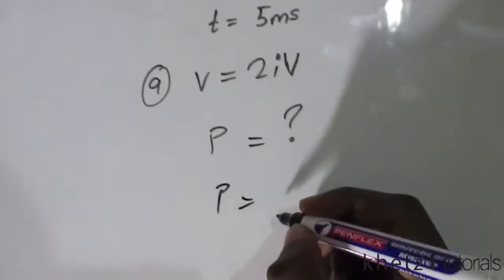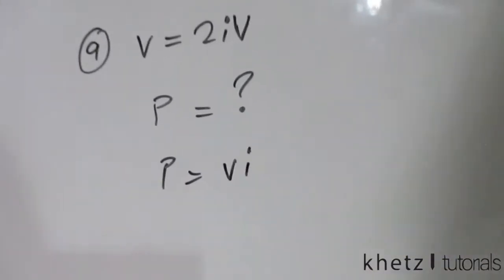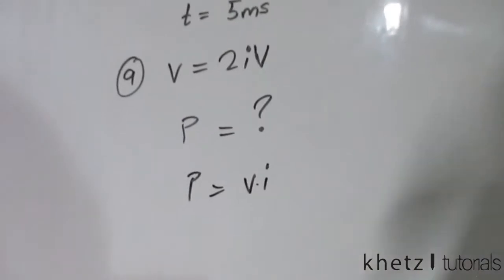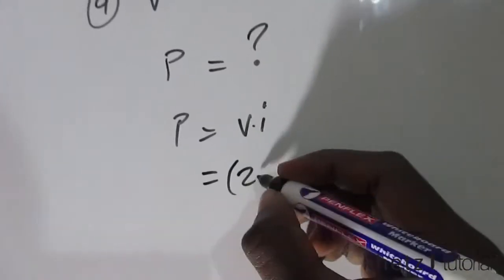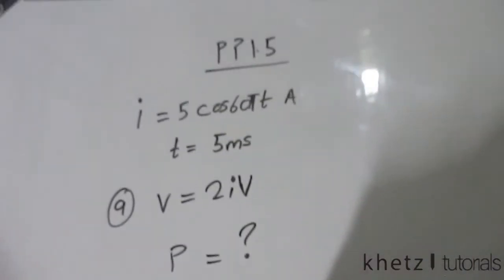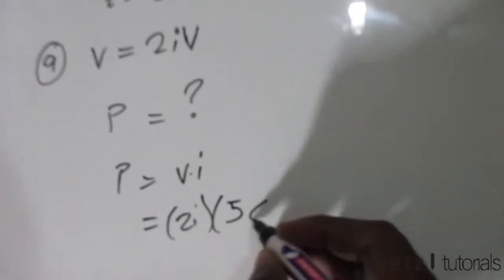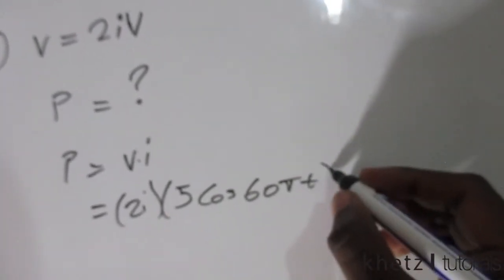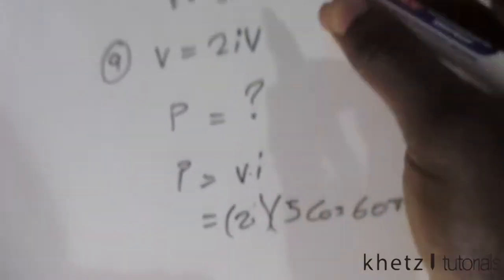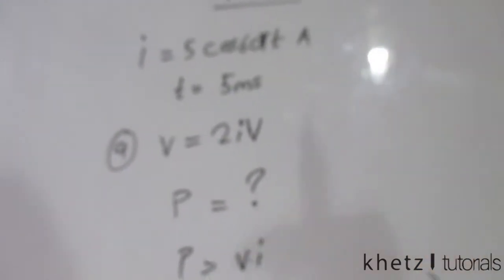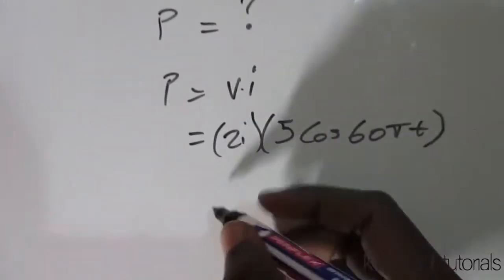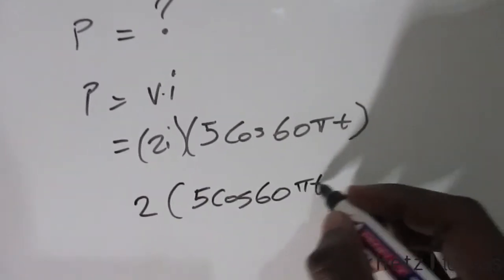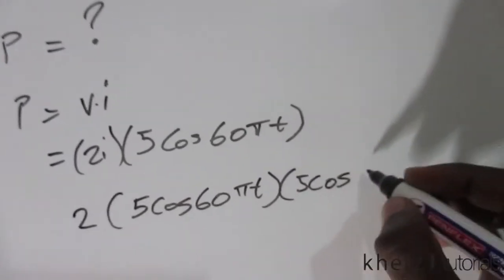We do know that power is equal to voltage multiplied by current. And so we are given both of these variables, we just basically substitute. So 2i, that's the voltage, and i is given as 5 cos 6πt. Now this i is the same i as the one given in the question, so we just basically substitute it again. So it's going to be 2 times 5 cos 6πt times 5 cos 6πt.